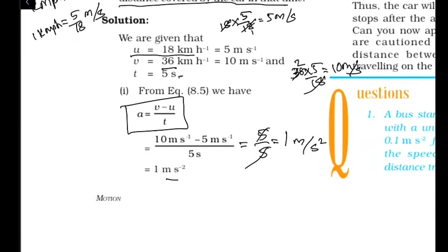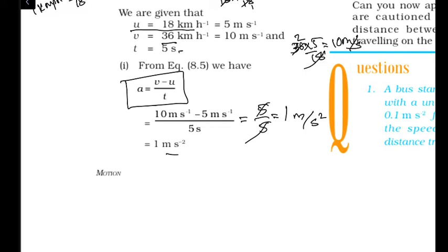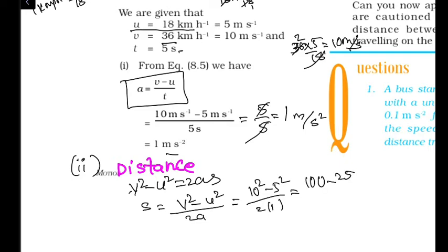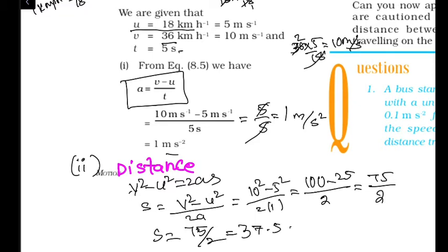For total displacement, using V² - U² = 2AS, so S = (V² - U²) / 2A = (10² - 5²) / (2 × 1) = (100 - 25)/2 = 75/2 = 37.5 meters.